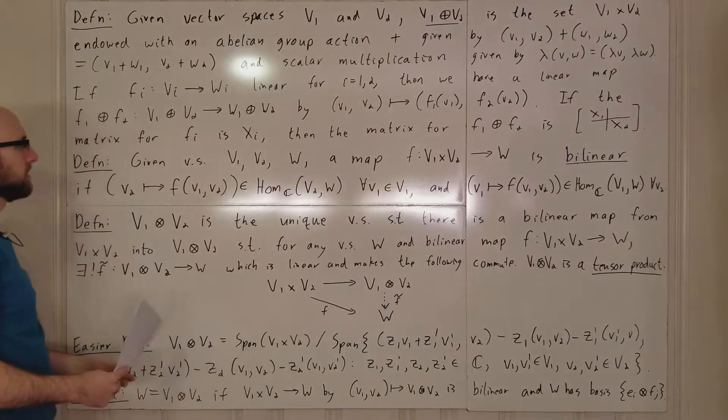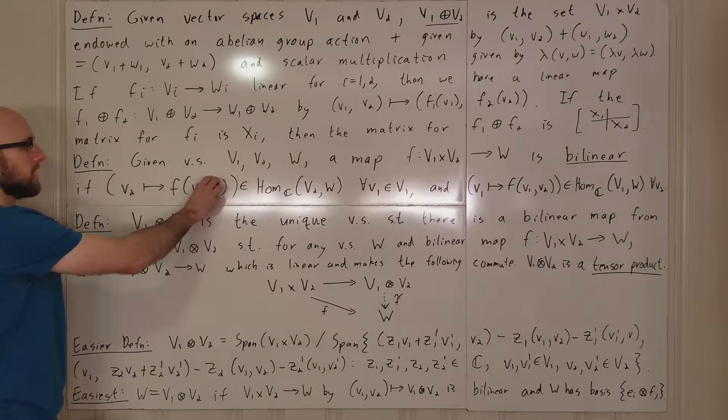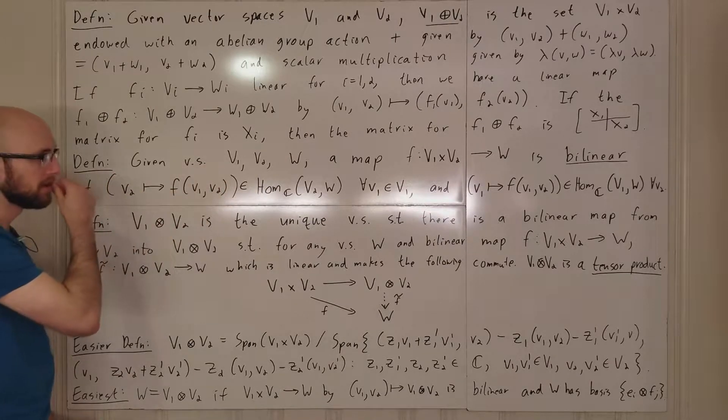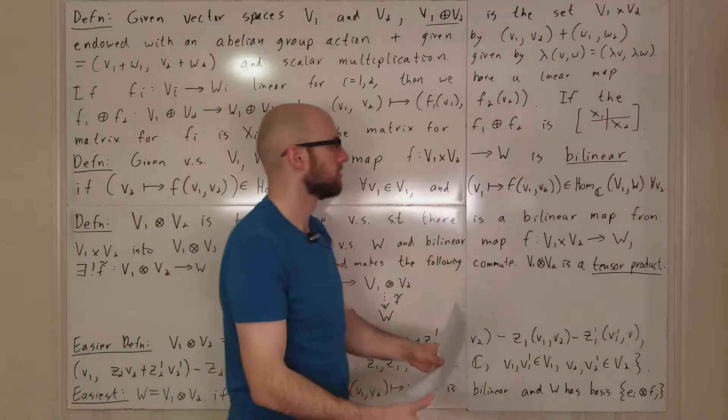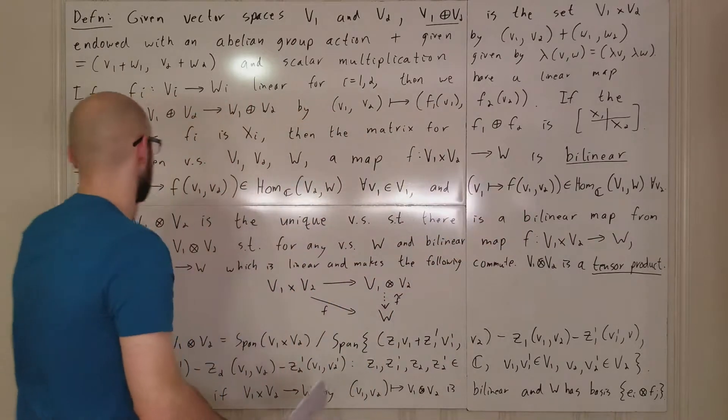Basically, if you plug in a linear combination here, you need to get a linear combination over here. And the same thing for, if you fix a V2, and you have a similar thing for V1.